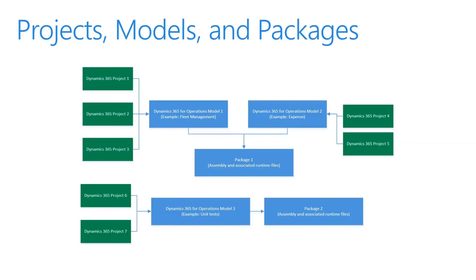A Microsoft Dynamics 365 for Finance and Operations package is a deployment unit that may contain one or more models. In addition to elements, this includes model metadata, which is the description data that defines the properties and behavior of the model. A package can be exported to a file, which can then be deployed into a staging or production environment. Here we can see on the left-hand side, in the green boxes, we have all of these different projects, which are included within a model, and you can have multiple projects within a single model. All of our models then point to and are included in our packages.